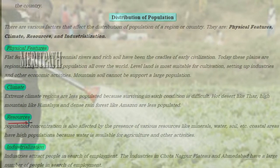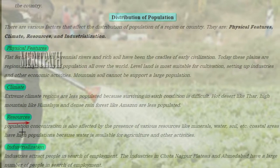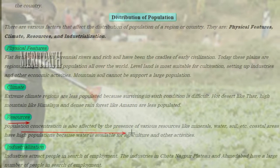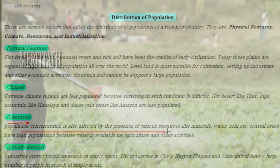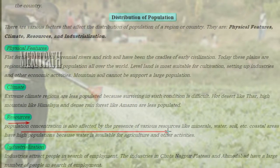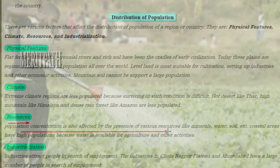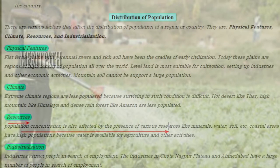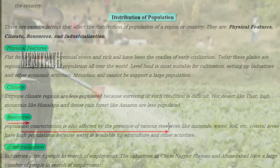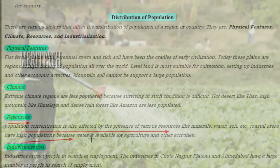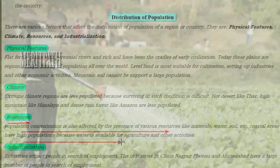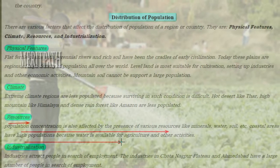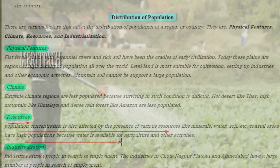Coming to the next factor: Resources. Population concentration is also affected by the presence of various resources like minerals, water, soil, etc. Coastal areas have high population because there is plenty of water available for agriculture and other activities.